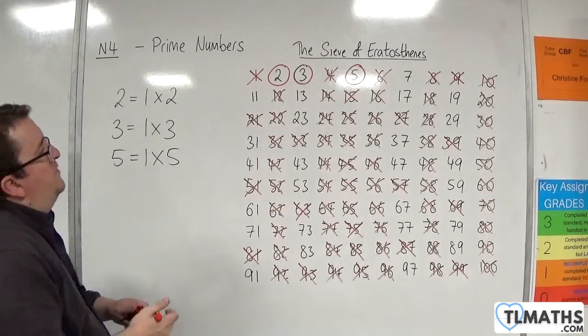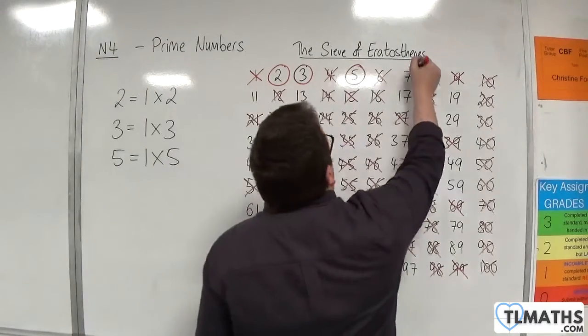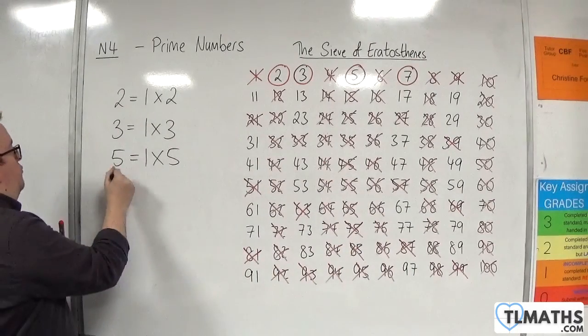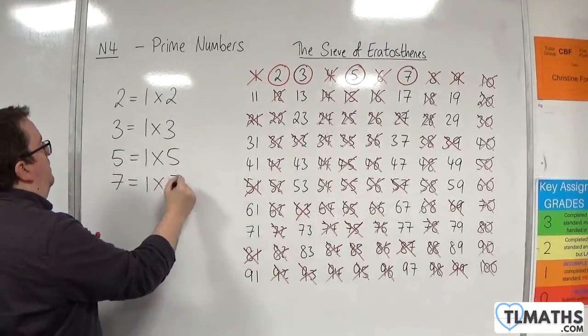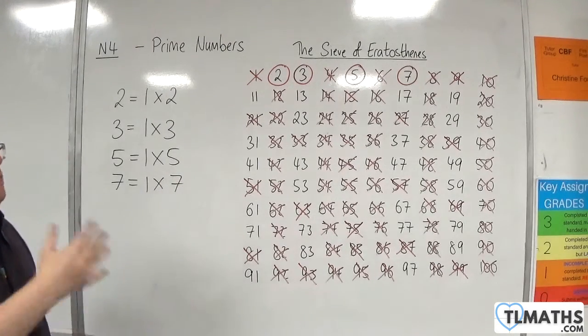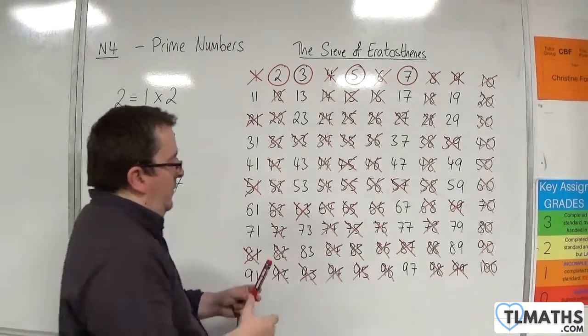So the next number that is not crossed off in the list is seven which must be prime. So seven is just written as one times seven. So seven is a prime number.